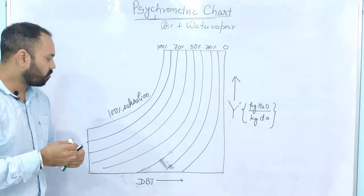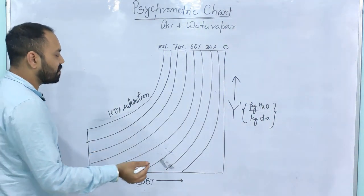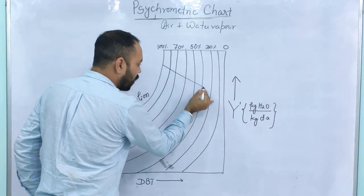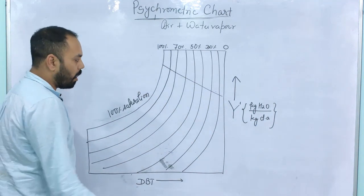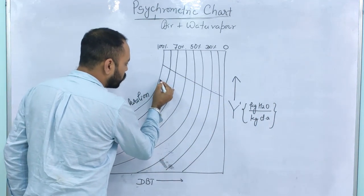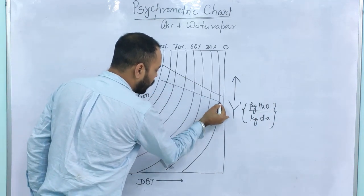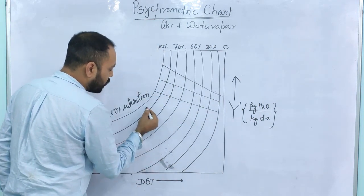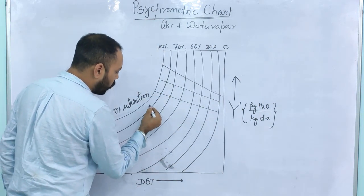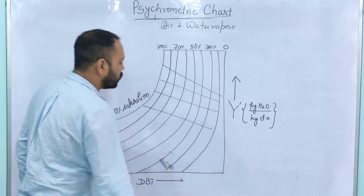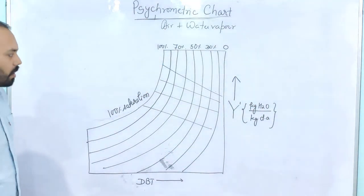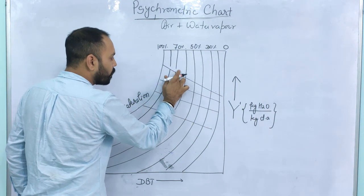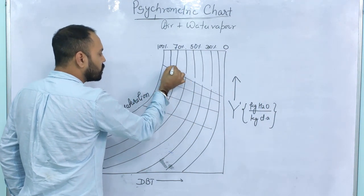There are also some slant lines. These lines are not perfectly straight, and they are also not parallel to each other — they are slightly curved and not exactly parallel. These are called the adiabatic cooling lines.